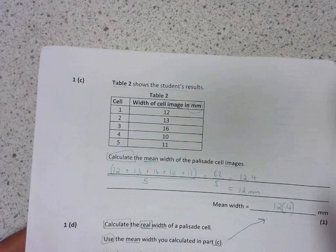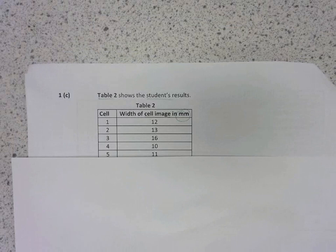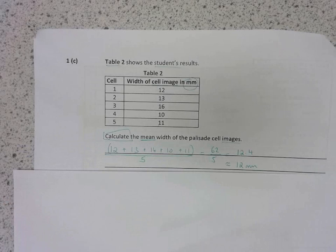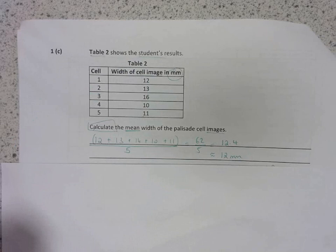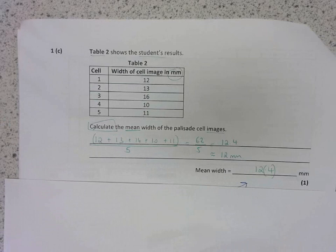1C. Table 2 shows the students' results. So, they are looking at the width of cells, of the palisade cells. You need to calculate the mean. So, you add them up and divide it by the number of cells there are, which is five. Because the width was measured to no decimal places just to two significant figures, you should normally give your mean to two significant figures, but both 12 and 12.4 are given marks in this case.